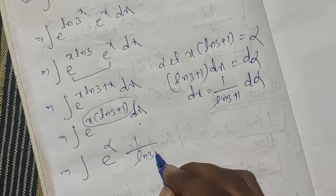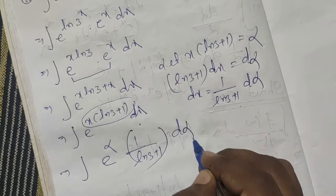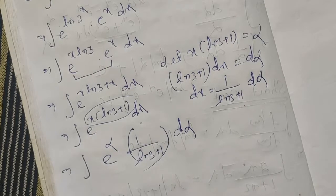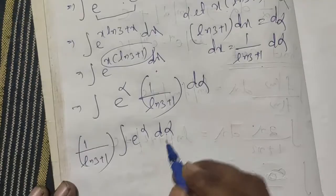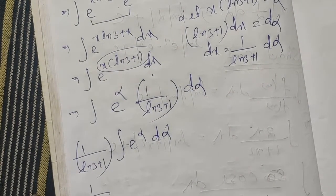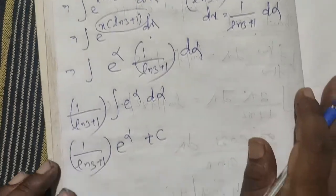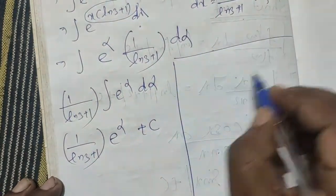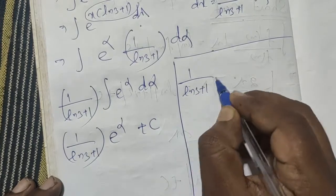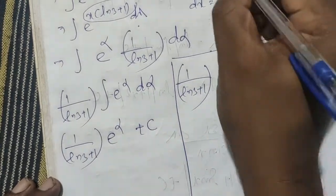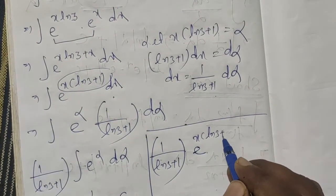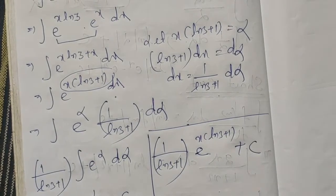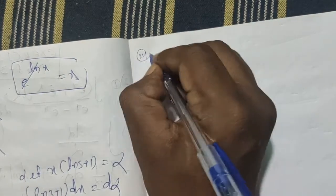We get 1 by ln 3 plus 1 as a constant, taken out of the integration. Then integrating u to the alpha d alpha, we get 1 by ln 3 plus 1 times u to the alpha plus c. Finally, substituting back, the answer is 1 by ln 3 plus 1 times e to the power x into (ln 3 plus 1) plus c.